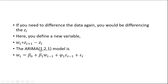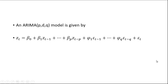An ARIMA(1,2,1) model would have one lagged W term and one lagged error term, just like the 1,1,1 model but using W_T instead of Z_T. Of course you're not limited to one lagged AR variable and one lagged error term — you could have Z lagged one period, two periods, all the way out to P periods, and the error term lagged one period through Q periods, plus the current period error term.